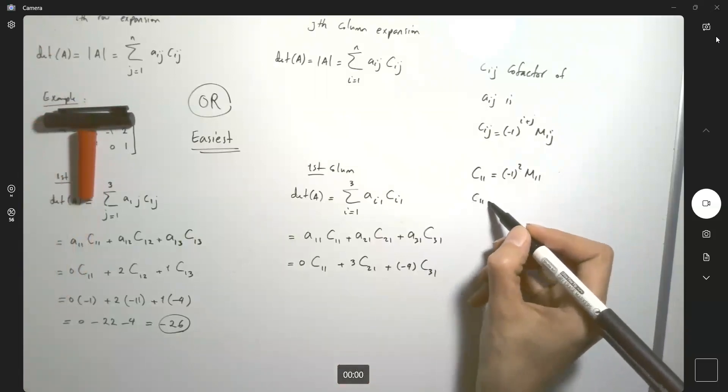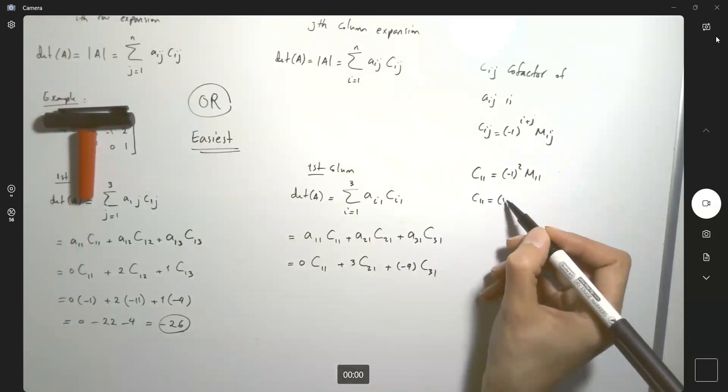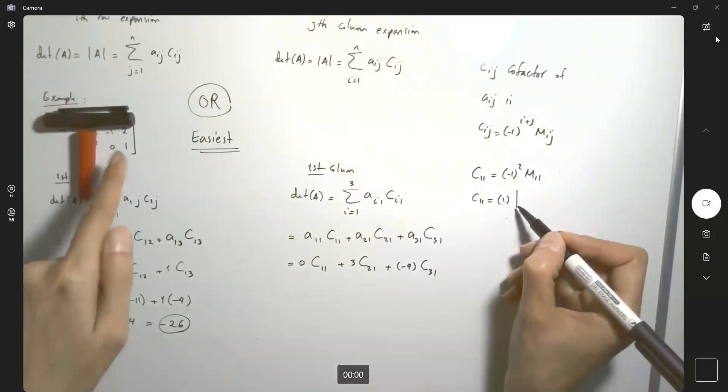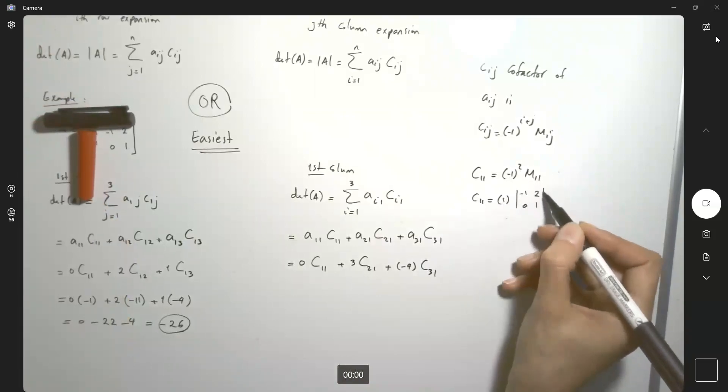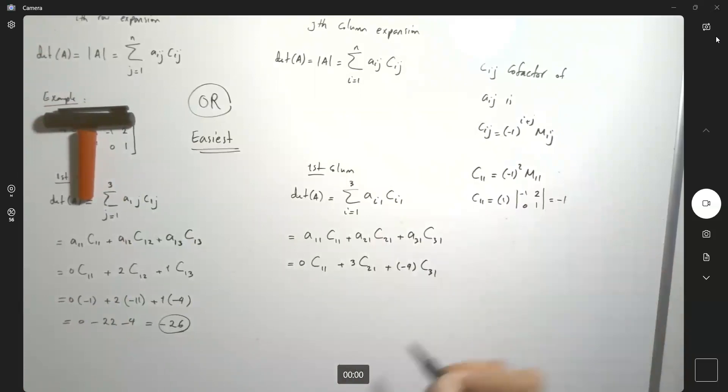This becomes C1,1: (-1)^2, which is 1, times the determinant of this little 2 by 2 matrix, which is -1. So, so far you have 0 times -1 plus 3 times C2,1.